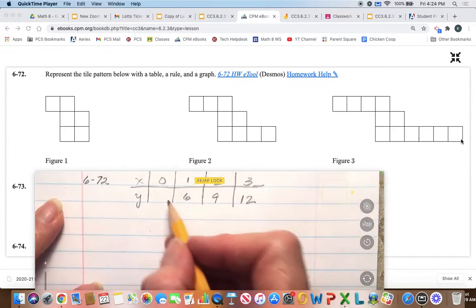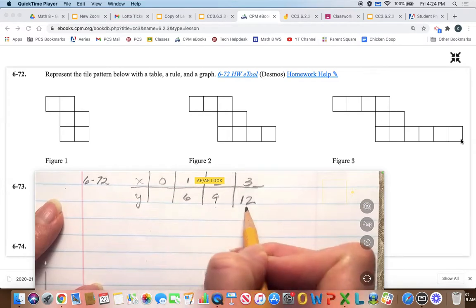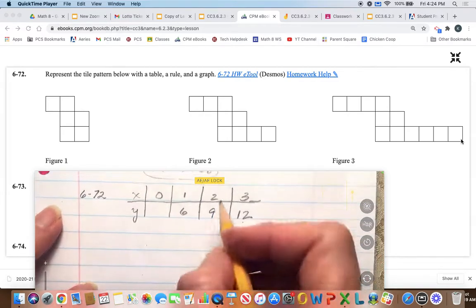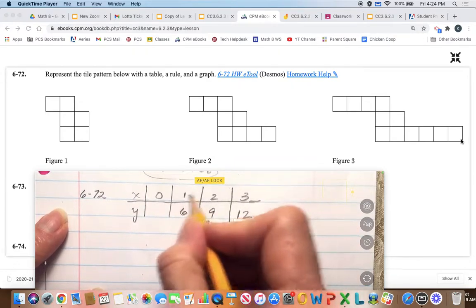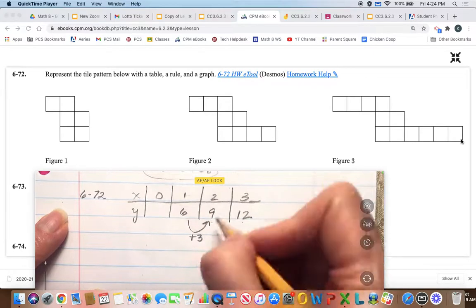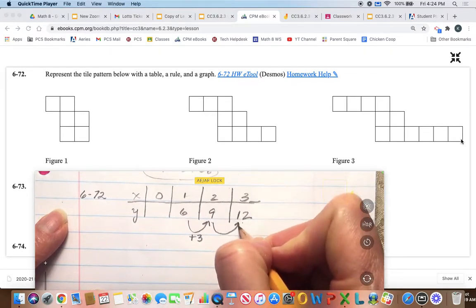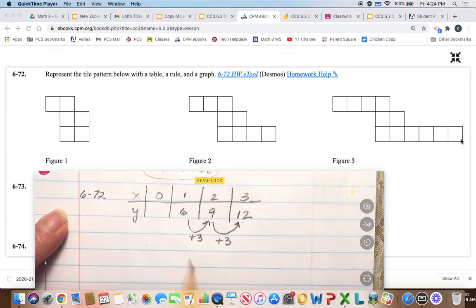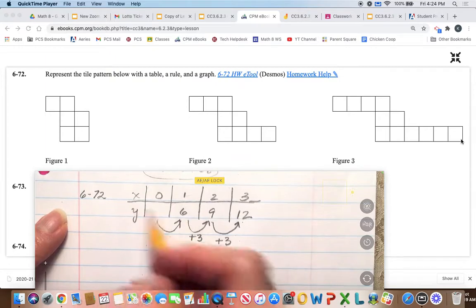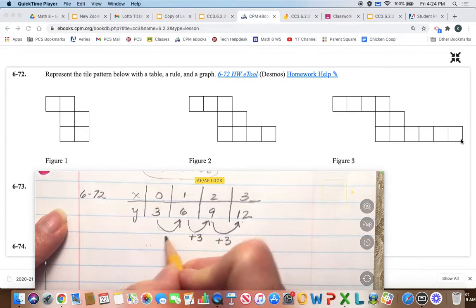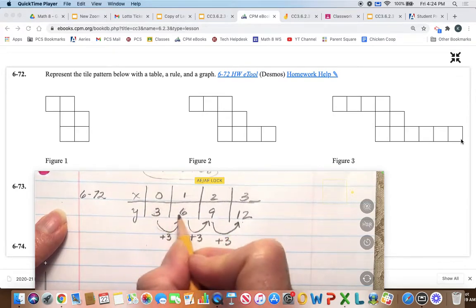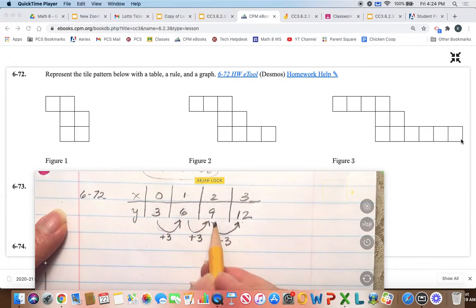All right, so we need to figure out what the difference is in the y values, and it looks like every time we increase x by one, we add three in y's, so every time we're adding three. So if we want to work backwards to what figure zero is, this time we'll have to subtract three to get three. Okay, so that fits the pattern, because every time we increase x by one, we're adding three.